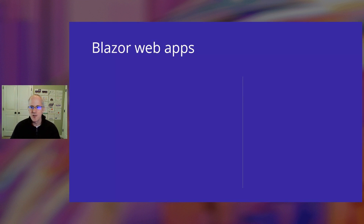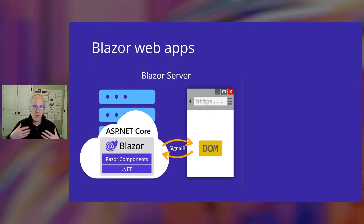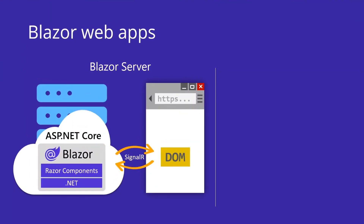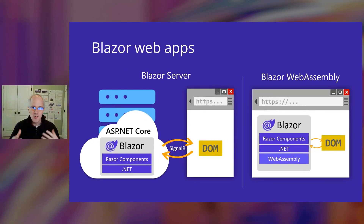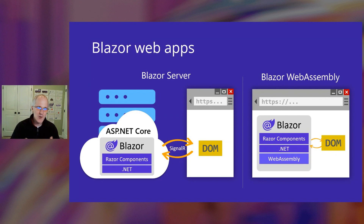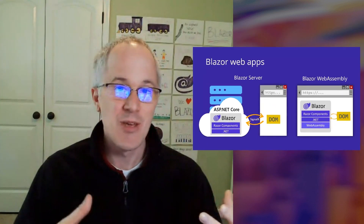Blazor currently supports two different hosting models for web apps. The first is Blazor Server, where your components run on the server and handle UI interactions and DOM updates over a real-time connection with the browser. The second is Blazor WebAssembly, where your components run in the browser on a WebAssembly-based .NET runtime downloaded with your app. Regardless of which hosting model you use, the way you write your Blazor components is exactly the same — the same components can be hosted either way.